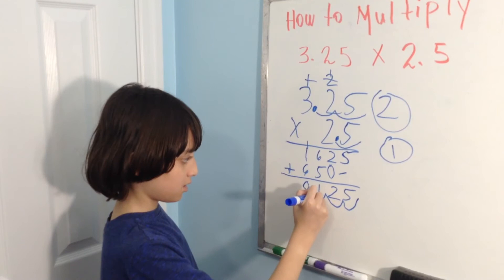That's how you multiply decimals from Frank. See you. Bye. See you in the next tutorial.